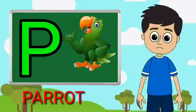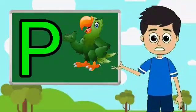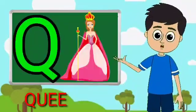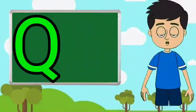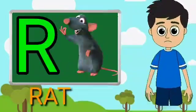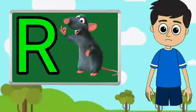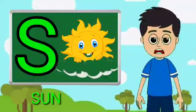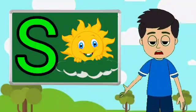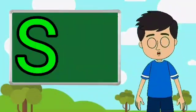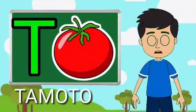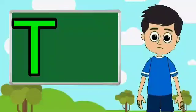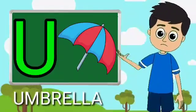E for parrot, U for tune, R for rat, S for sun, E for tomato, U for umbrella.